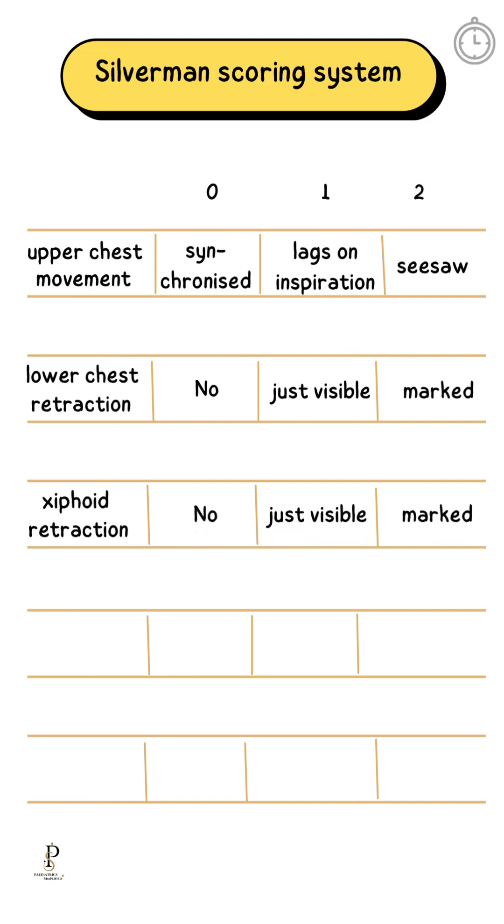Xiphoid retraction: no retraction is grade 0; just visible is grade 1; marked retraction is grade 2.